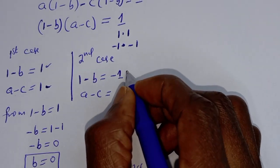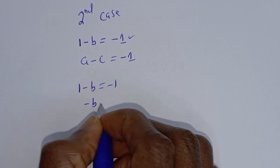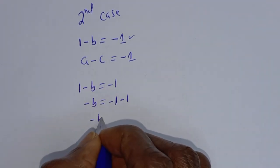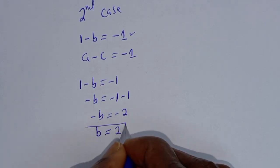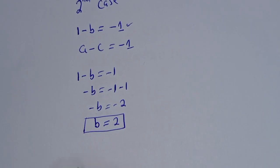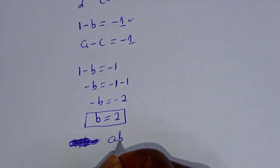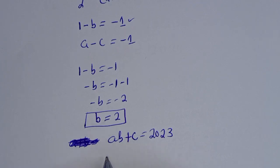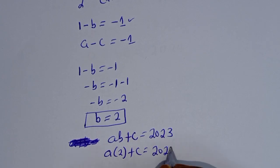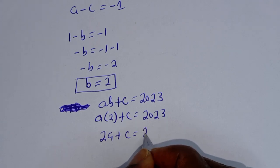Now let's consider the second case: (1 - b) = -1 and (a - c) = -1. From 1 - b = -1, we get b = 2. Substituting b = 2 into equation one (ab + c = 2023): 2a + c = 2023.